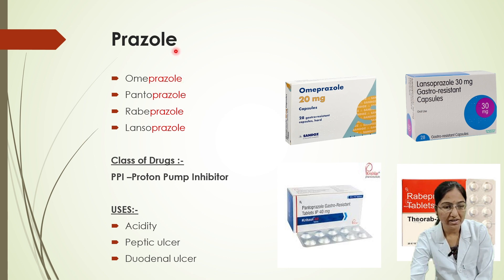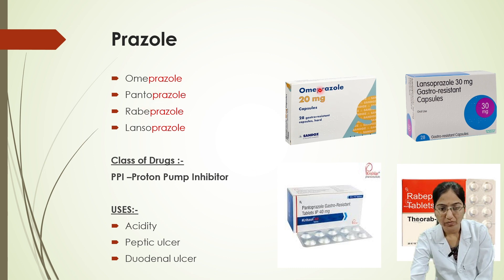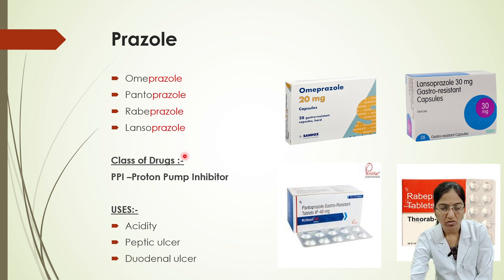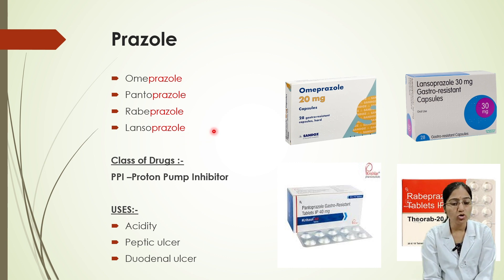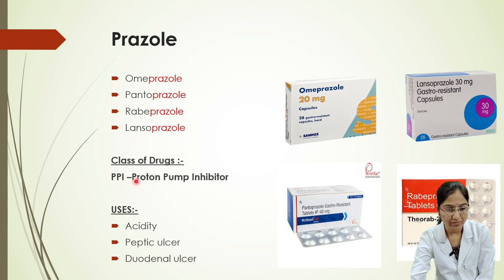For example, omeprazole — the end name is '-prazole'. Other examples include pantoprazole, rabeprazole, and lansoprazole. You can see that all of these words end with '-prazole'.